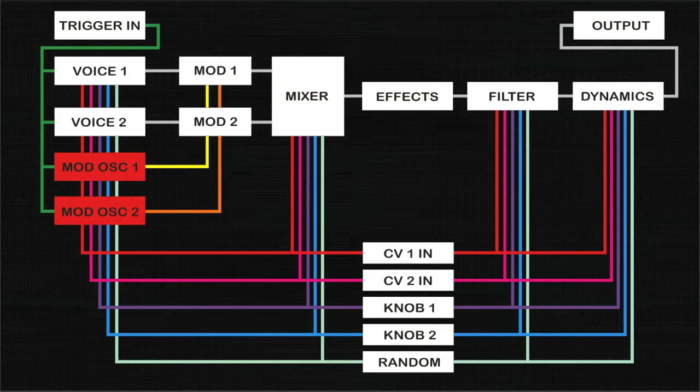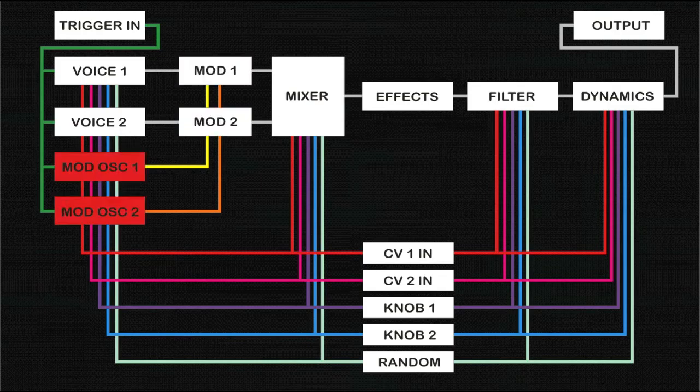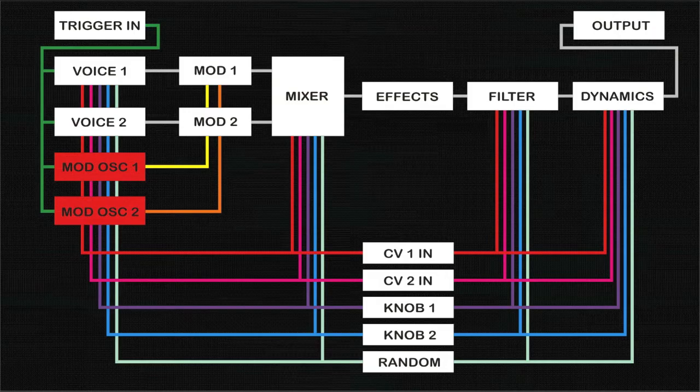Modulation oscillators 1 and 2 can only be routed to Mod 1 and Mod 2 sections. Each modulation oscillator can serve several functions. It can act as an envelope, LFO, or oscillator covering the frequency range of 0 Hz to 20 kHz.